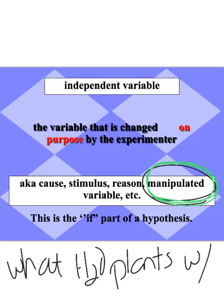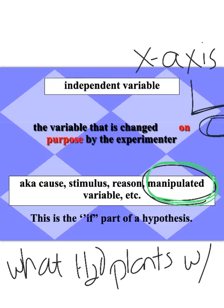When we are building our graphs, this independent variable goes on the x-axis, which is on the bottom. So this independent variable always goes on our x-axis when we're building a graph of our data from our experiment.